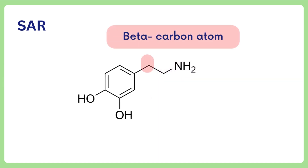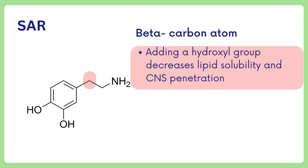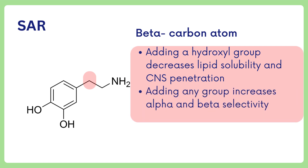Next, the beta-carbon atom is the first carbon atom attached to the phenyl ring. Adding a hydroxyl group on the beta position decreases lipid solubility and CNS penetration. Adding any group on the beta-carbon increases alpha and beta-agonistic activity.